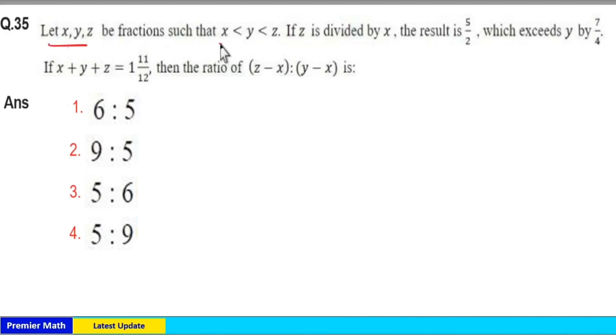Let x, y, z be fractions such that x < y < z. If z divided by x results in 5/2, which exceeds y by 7/4. If x + y + z = 1 and 11/12, then the ratio of (z - x) to (y - x) is: